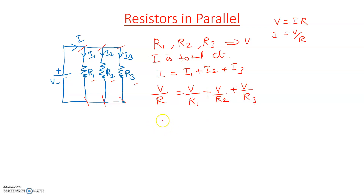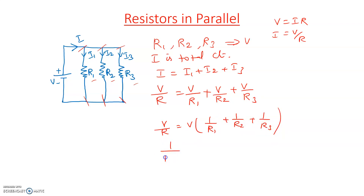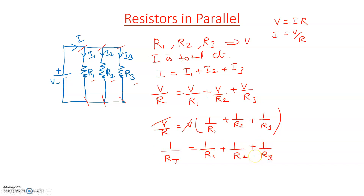We can write: V by R equals V times (1/R1 + 1/R2 + 1/R3). Cancelling V from both sides, 1 by R_equivalent equals 1/R1 plus 1/R2 plus 1/R3. In a parallel combination, the reciprocal of equivalent resistance equals the sum of reciprocals of the individual resistances.